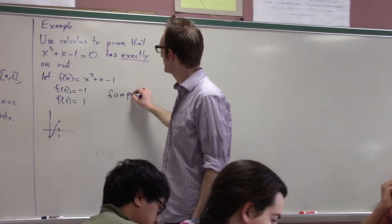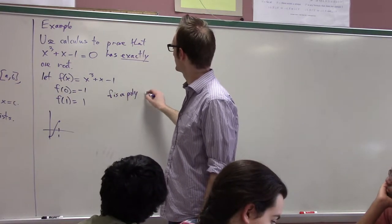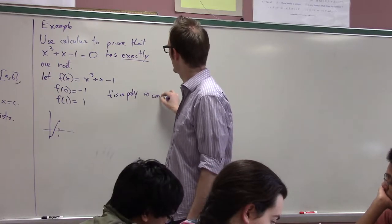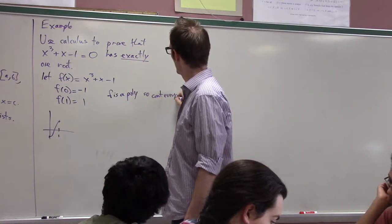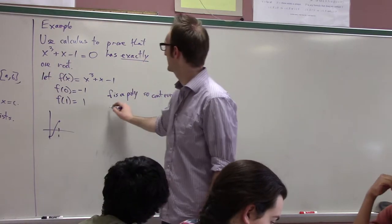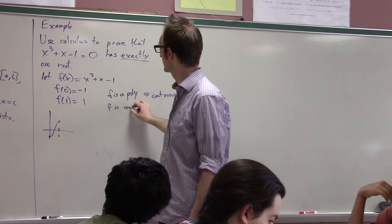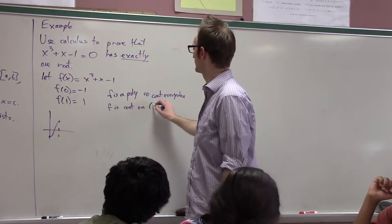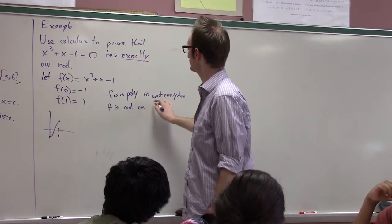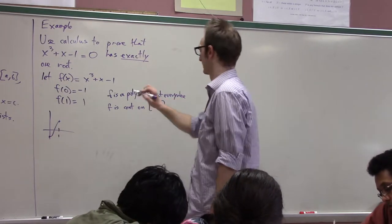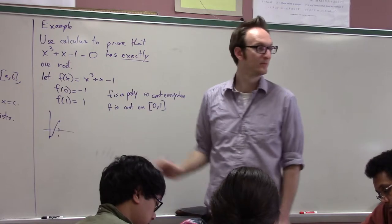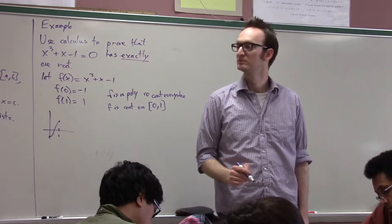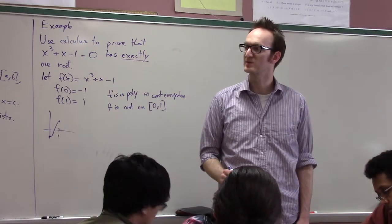So this is just a little extra practice with writing this all out, right? We say F is a polynomial, so continuous everywhere. In particular, F is continuous on the interval zero, one. And then, remember how to write this? Daniel Jacobson, do you remember this kind of stuff?